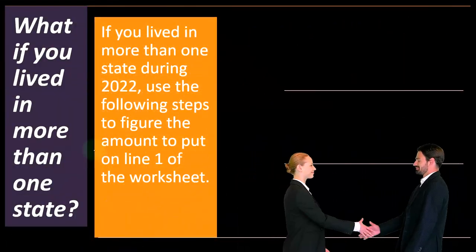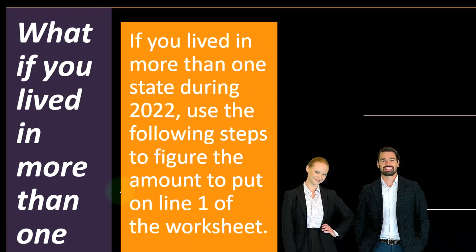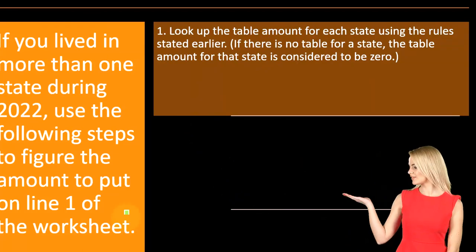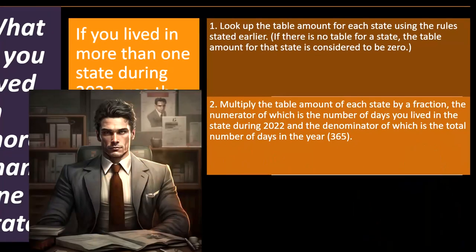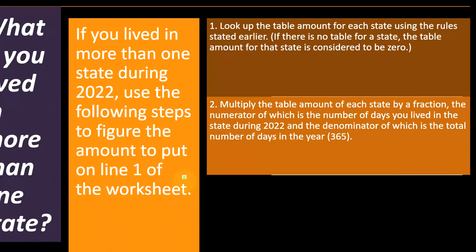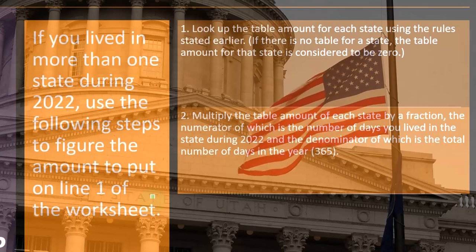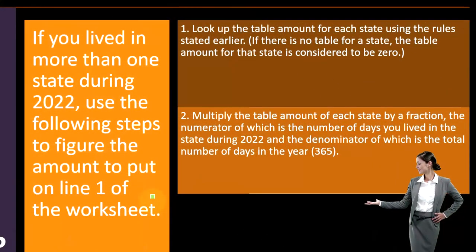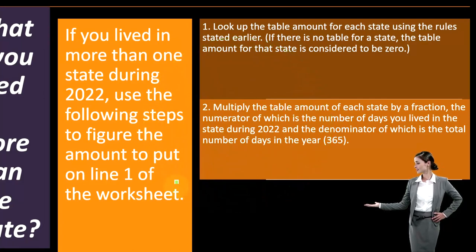Tax software can differ in cost depending on how many states and foreign income sources you handle. If you lived in more than one state during 2022, use the following steps to figure the amount on line one of the worksheet. Step one: look up the table amount for each state using the rules stated earlier. If there's no table for a state, the table amount for that state is considered to be zero. Remember, some states have a state income tax system and some have a sales tax — if dealing with sales tax, you can use actual sales tax or a table, since adding up all your sales receipts would be quite tedious.